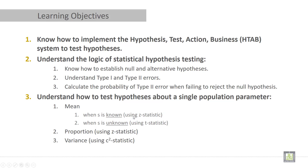When sigma is known it is for Z test and when sigma is unknown it is for T test. And then we will discuss about proportion test and we will discuss about variance chi-square test.